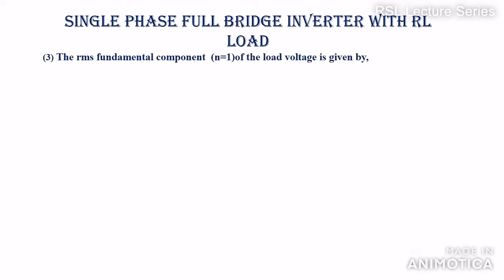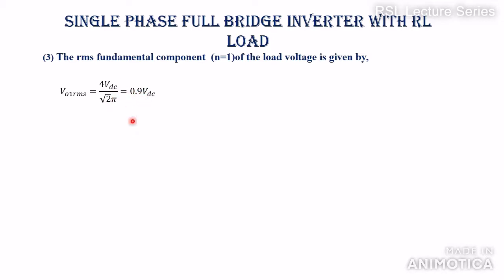Next, the RMS value of the fundamental component. Substituting n = 1 in the Fourier expression, the peak value is 4VDC/π. The RMS value is Vm/√2, so V01_RMS = 4VDC/(π√2), which simplifies to 0.9·VDC.